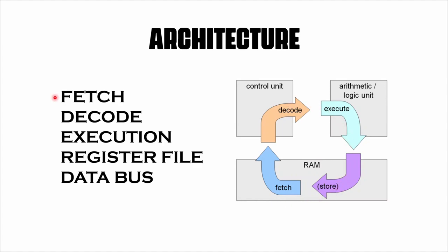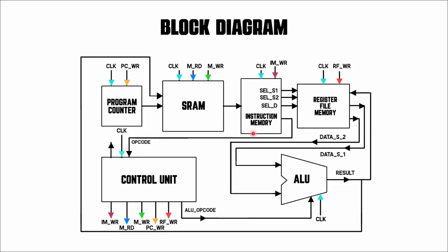Here we have fetch, decode, execution, and a register file which stores the data using database instructions. The data are transferred. Looking at the block diagram, the instruction memory is part of the data path unit. The data path unit decodes the instruction and sends the opcode to the control unit, which controls each and every block — giving instructions for memory read, memory write, PC write, and register file write. The register file outputs are given to the ALU, which operates according to the opcode.